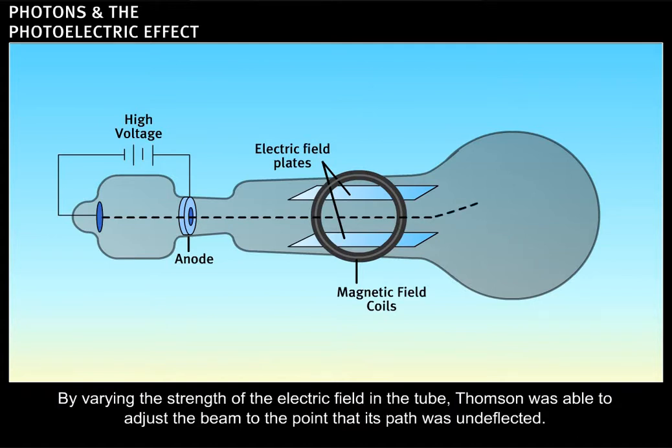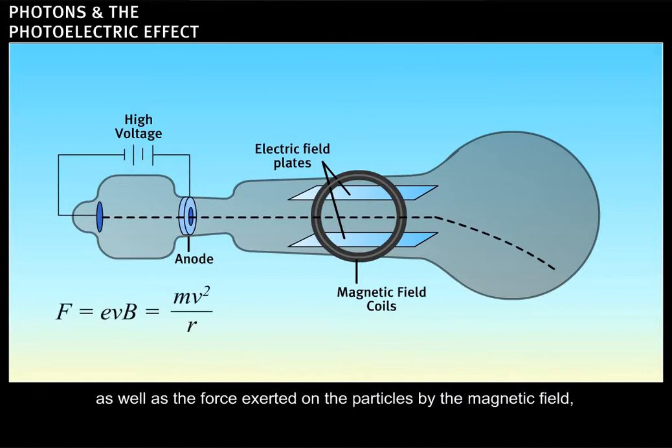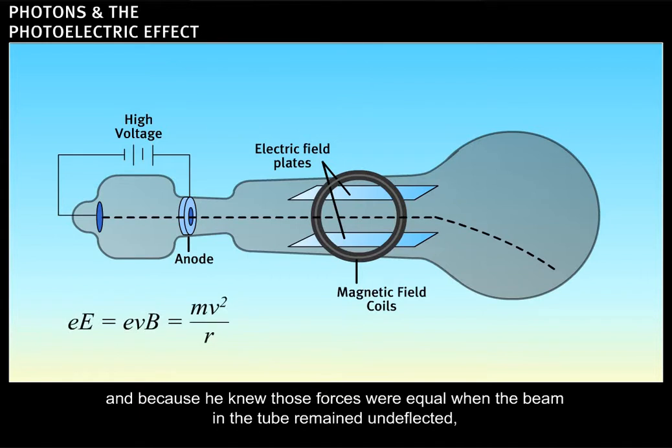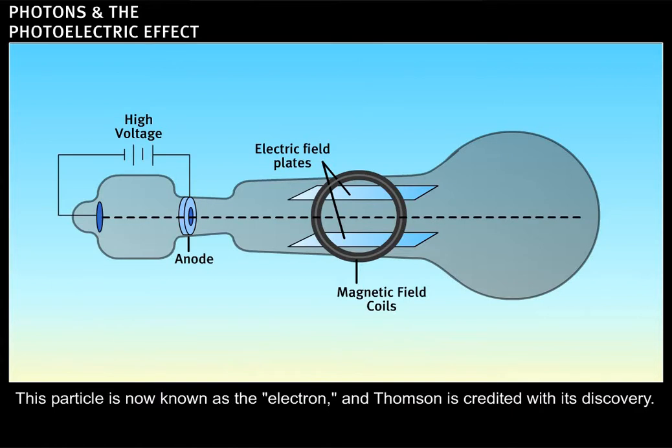By varying the strength of the electric field in the tube, Thompson was able to adjust the beam to the point that its path was undeflected. Because he knew the force exerted on the cathode ray particles by the electric field, as well as the force exerted by the magnetic field, and because he knew those forces were equal when the beam remained undeflected, he was able to determine the charge-to-mass ratio of a cathode ray particle. This particle is now known as the electron, and Thompson is credited with its discovery.